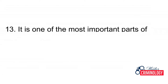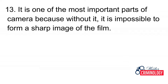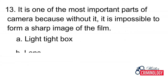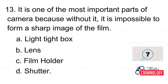Question 13: It is one of the most important parts of a camera because without it, it is impossible to form a sharp image on the film. A. Light tight box, B. Lens, C. Film holder, D. Shutter. Answer: B. Lens.